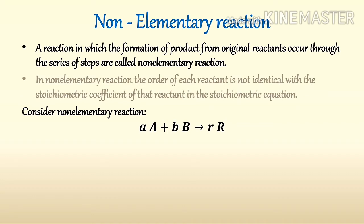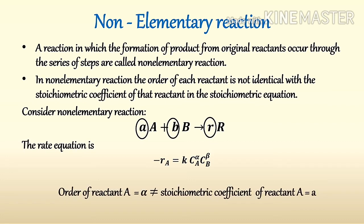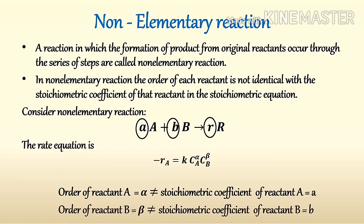In a non-elementary reaction, the order of each reactant is not identical with the stoichiometric coefficient of that reactant in the stoichiometric equation. In this reaction, small a, small b, and small r are stoichiometric coefficients. The rate equation is written as: -rA = k · CA^α · CB^β. Here, the order of reactant A (α) is not equal to the stoichiometric coefficient a, and the order of reactant B (β) is not equal to the stoichiometric coefficient b.